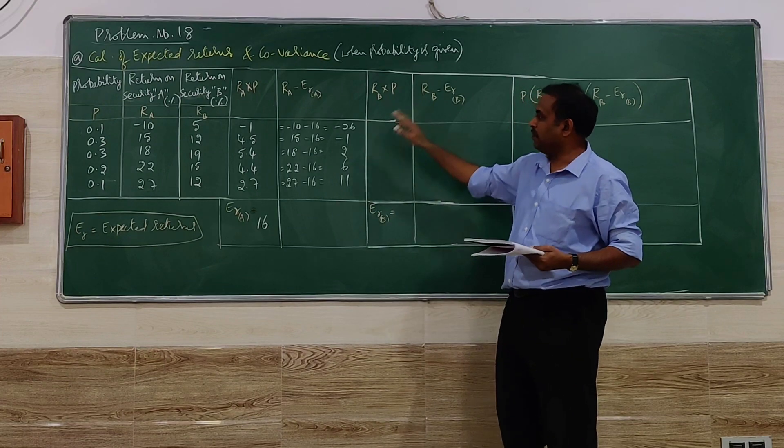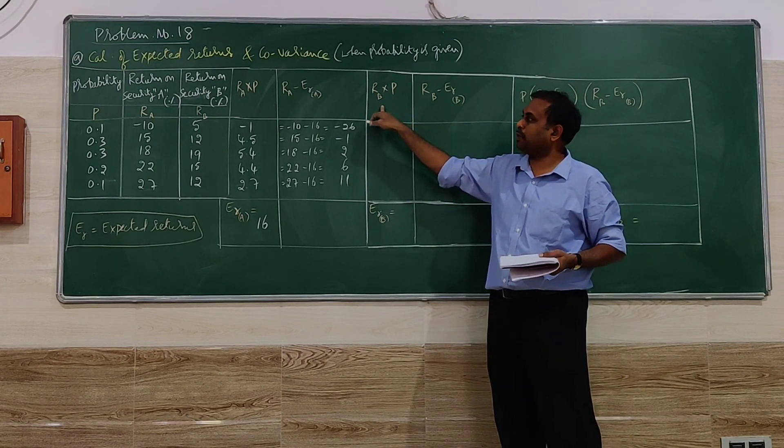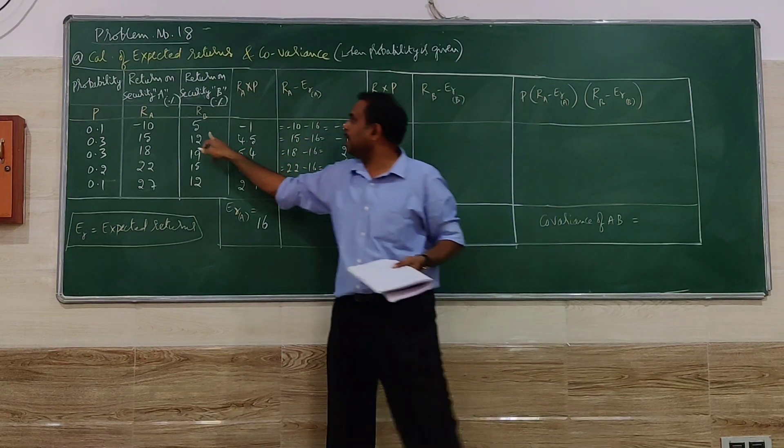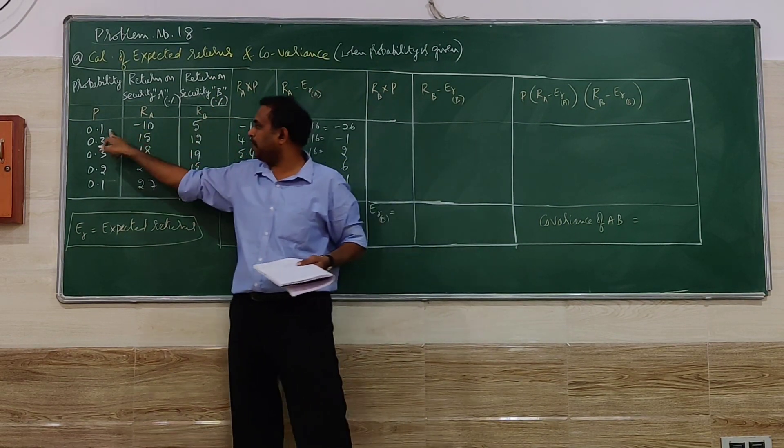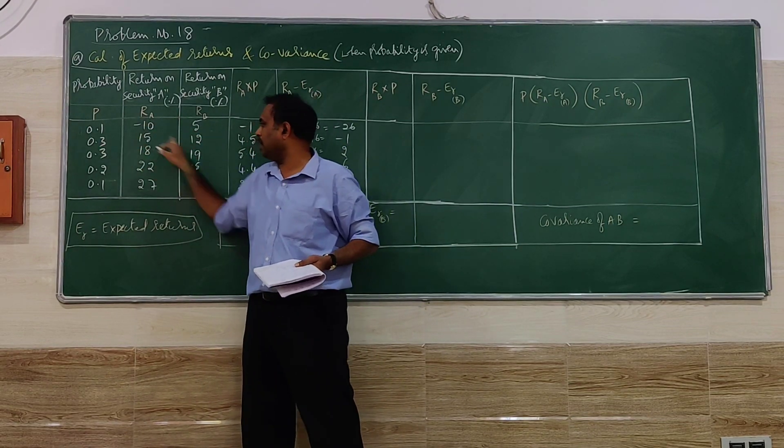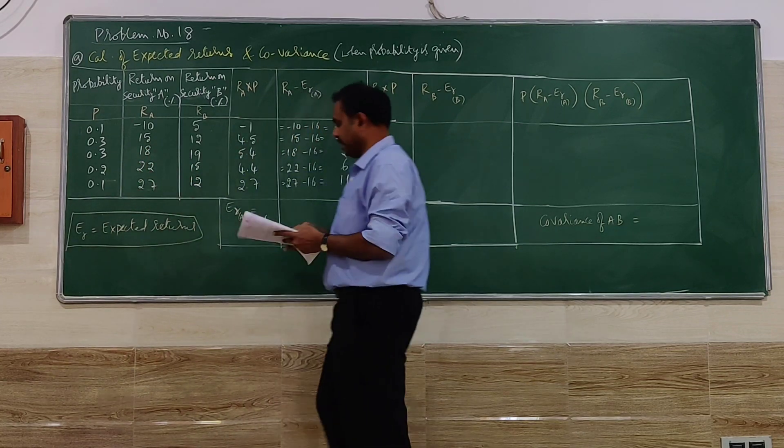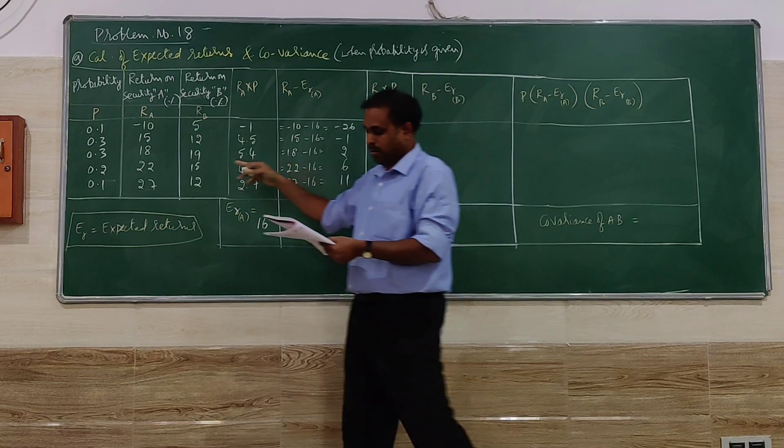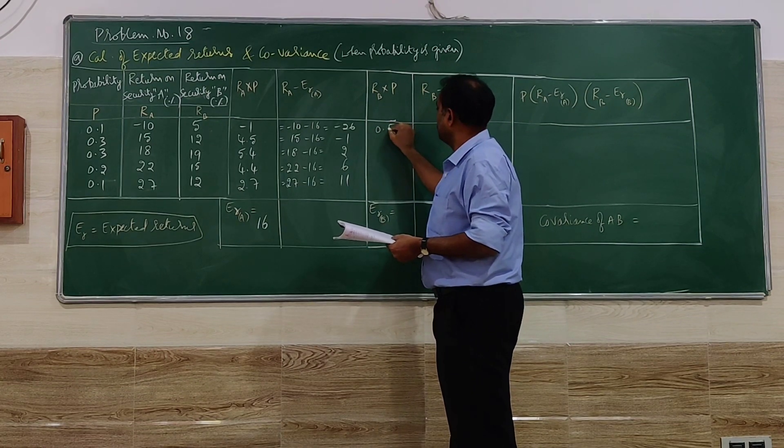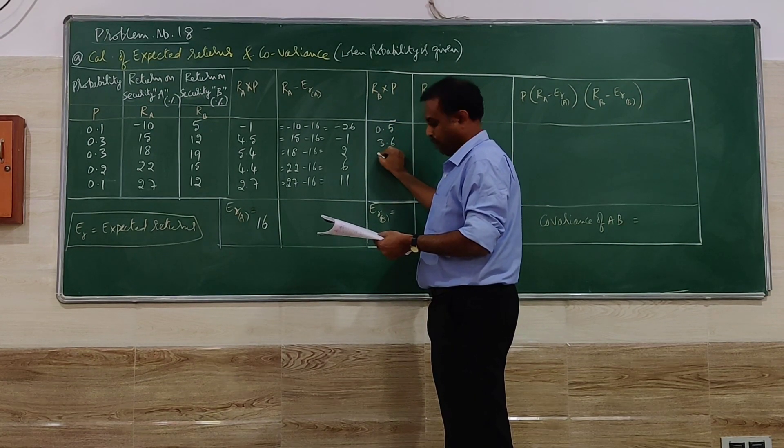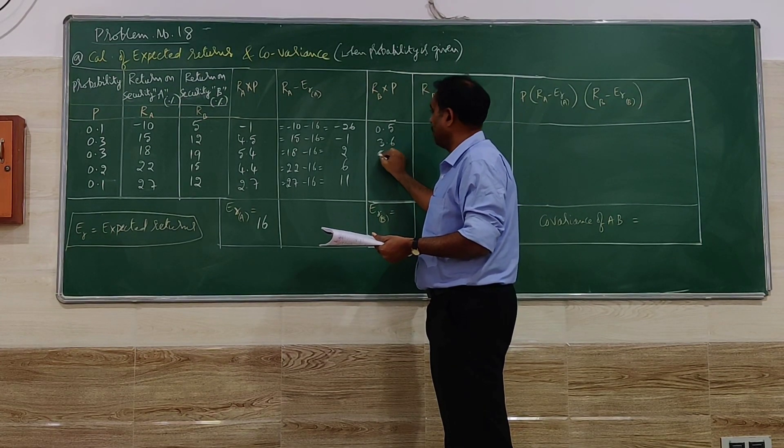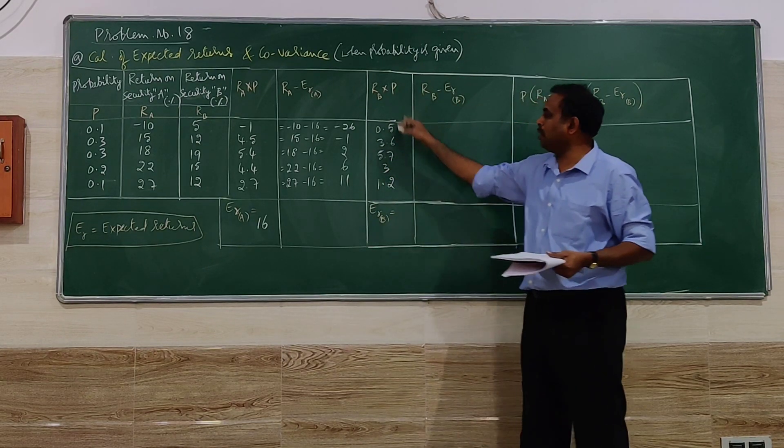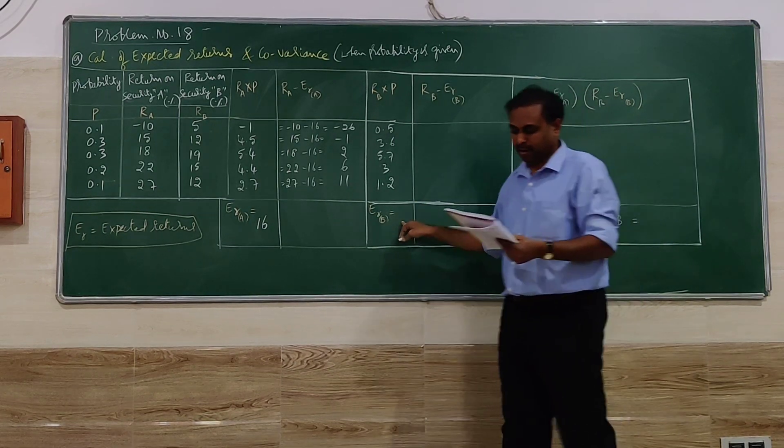Next we go for calculation of expected return of E(RB). RB into P. RB is this, return on security B multiplied by probability, like 5 into 0.1, 12 into 0.3, 19 into 0.3, like that. Let us take the values therein. 5 into 0.1 is 0.5, like that 3.6, 5.7, 3, and 1.2. So here all the values are plus. If you add, you will get expected returns.